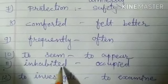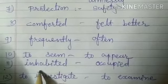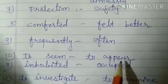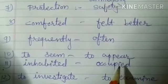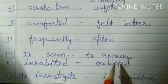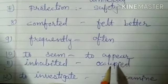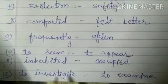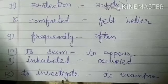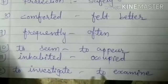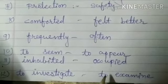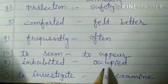Number 11: inhabited. Inhabited ka meaning hota hai occupied — jisne kar diya hai, jiske haastak ho gaya hai, jahan pe koi rehta hai, is tarah se, usko bolte hai occupied. And number 12: to investigate. Uska meaning hota hai to examine, to check. So these are the meaning words.